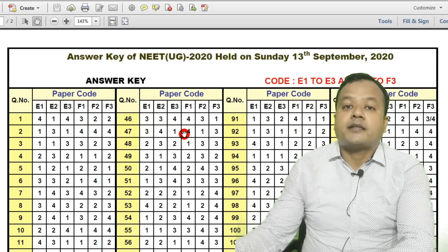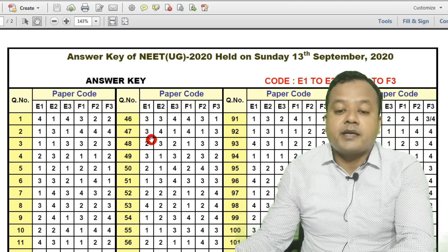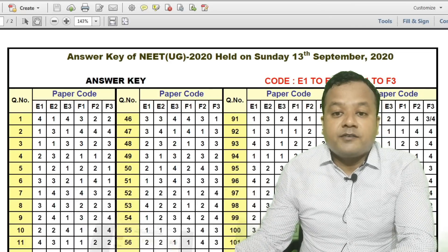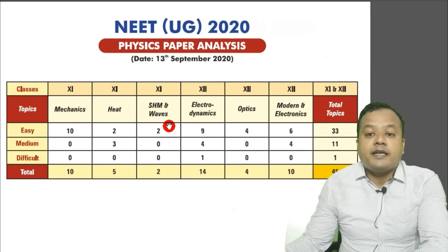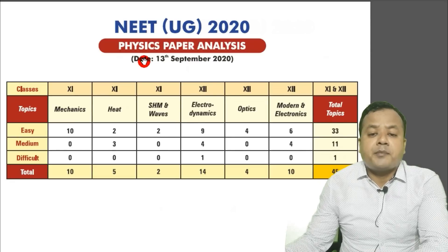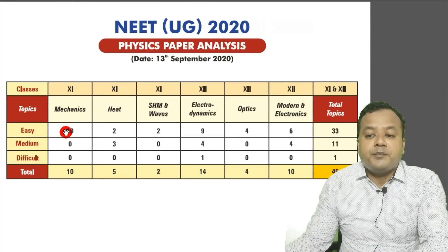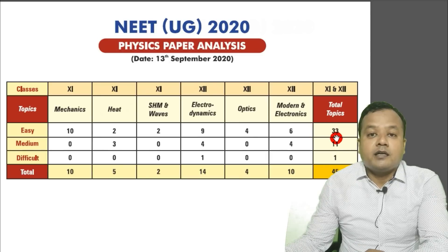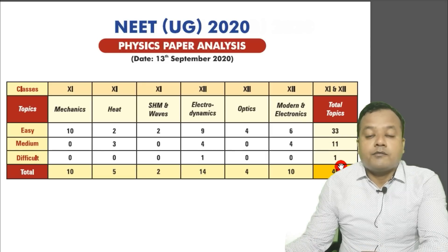Now we will talk about the paper analysis. If we talk about the Physics paper, then it was easy — 33 questions out of 45 were easy level, 11 questions were of medium level, and there was only 1 question that was difficult out of 45 questions in Physics.